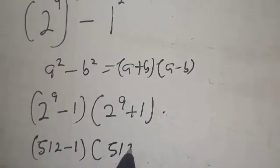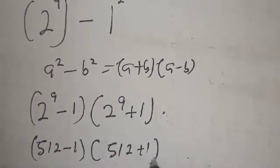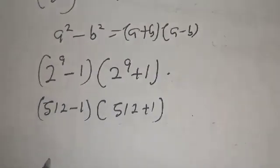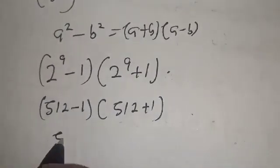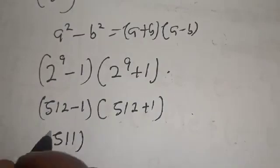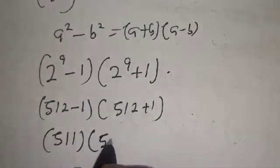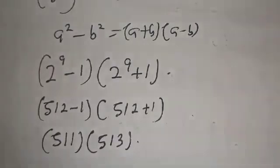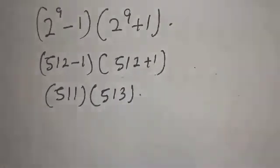multiplied by 512 plus 1. Now, 512 minus 1 is 511, multiplied by 512 plus 1 which is 513.